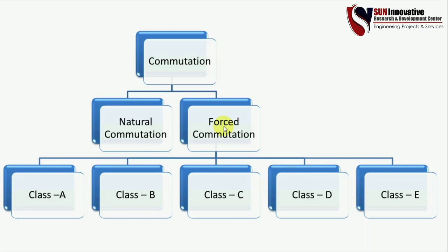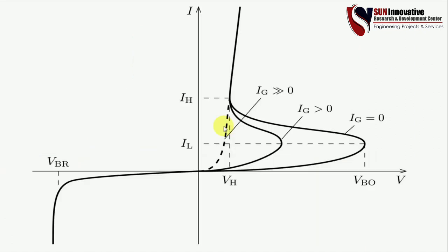As you can see, the AC supply starts at zero, goes to the peak value, returns to zero, goes negative, and returns to zero again — it naturally becomes zero. Now let us look at the thyristor characteristic to understand why these zero values are important in commutation.